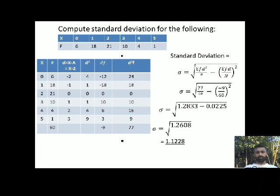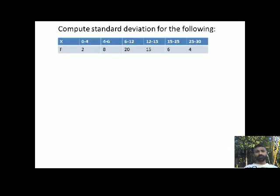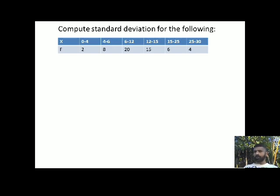I hope you have understood. Let me take up one more problem in which I have considered class intervals. x is equal to 0–4, 4–6, 6–12, 12–15, 15–25, and 25–30. The frequencies are 2, 8, 20, 15, 6, and 4. If you observe the class intervals, the class widths are not equal.